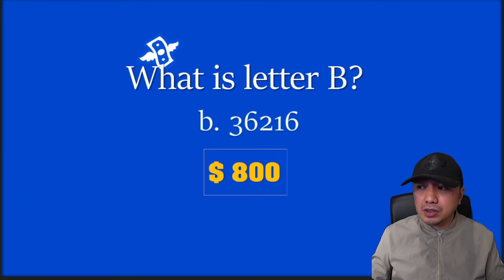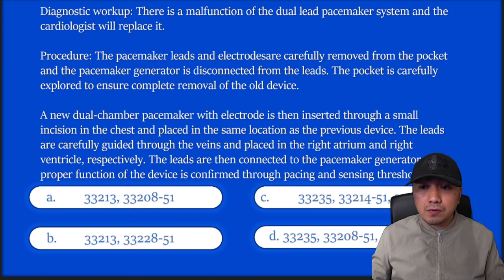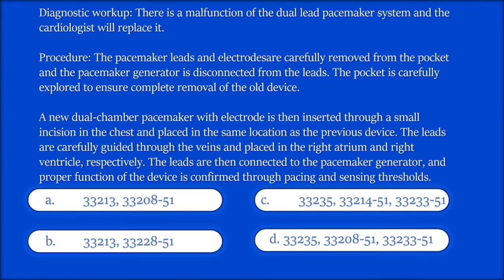Let's proceed to the final question — this is about pacemakers. There is a malfunction in the dual lead pacemaker system and the cardiologist will replace it. The pacemaker leads and electrodes are carefully removed from the pocket and the pacemaker is disconnected from the leads. A new dual chamber pacemaker with electrode is inserted through a small incision and placed in the same location. The leads are guided through and placed in the right atrium and right ventricle respectively, then connected to the pacemaker, and proper function is confirmed through pacing and sensing thresholds.